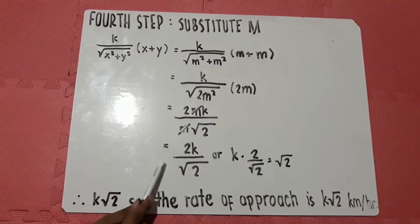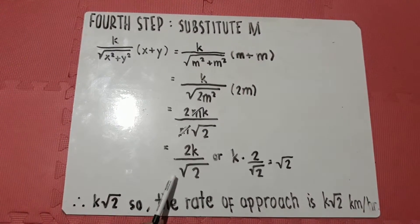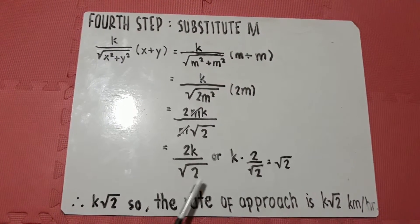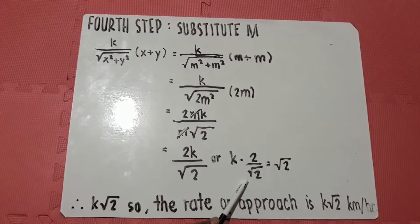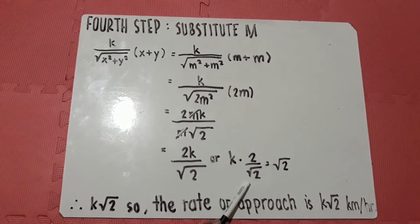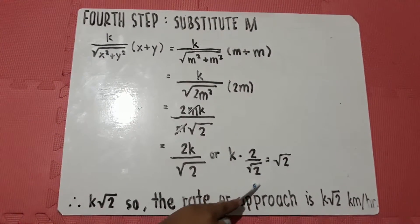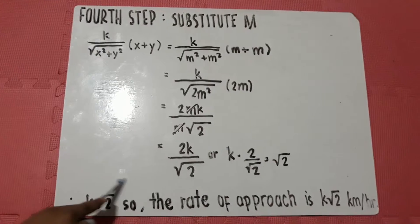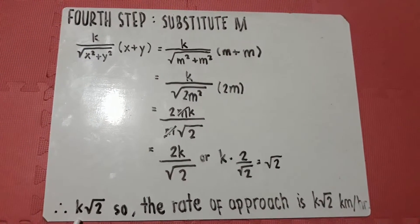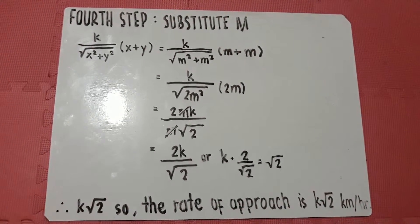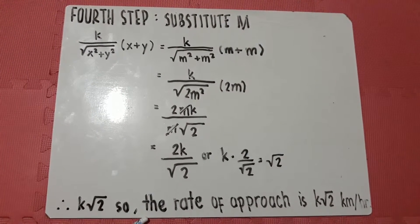For the last and final step, we have 2K over the square root of 2, or equivalently K multiplied by 2 over the square root of 2, whose product simplifies to the square root of 2. So our final answer is K square root of 2 — the rate of approach is K square root of 2 kilometers per hour.